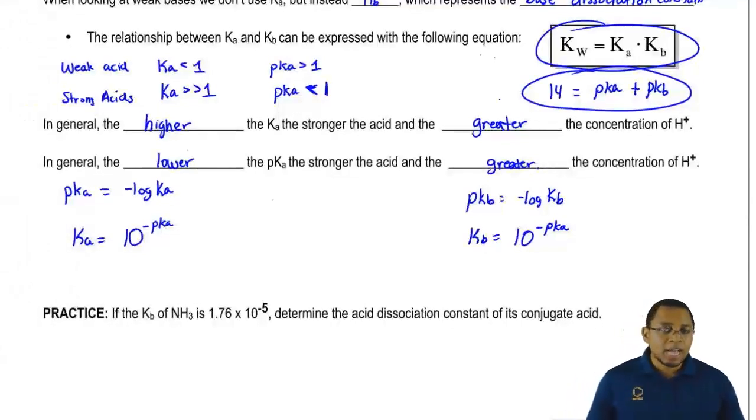Now that we've seen all these types of new variables and new types of equations, attempt to do the practice question on the bottom. Here I say if the Kb of NH3 is 1.76 times 10 to the negative 5, what is the acid dissociation constant of the conjugate acid? Conjugate acid is a term we learned earlier. But here we're given Kb and asked to find the acid dissociation constant. It's a simple conversion from one unit to another. Once you're done with that, click back on the explanation button and see how I approach this problem. Good luck guys.